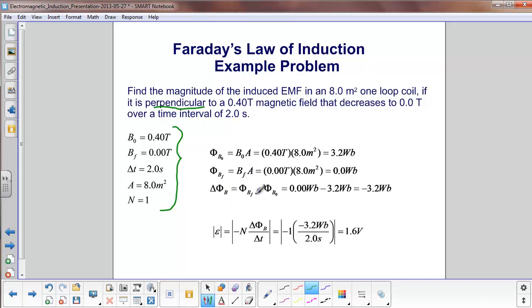So the change in flux is the final flux minus initial, so it's negative 3.2 Webers. We're not going to worry about the signs yet because we're just interested in the magnitude.